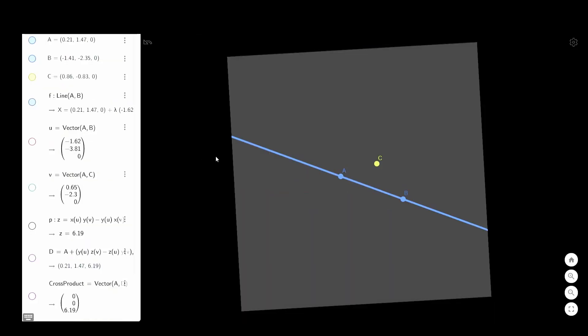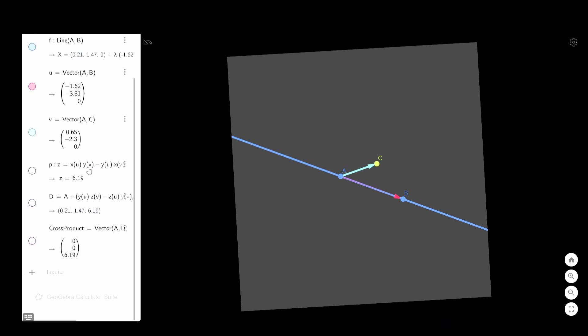Cross product can also be used in two dimensions. Let's say we have line AB and a point C. Now we have a vector U that's pointing from A to B and a vector V that's pointing from A to C. If we do dot product of these two vectors, based on the Z coordinate of the cross product, you can tell if point C is on one side of the line or on the other. Above AB the Z coordinate is positive and below AB the Z coordinate is negative.